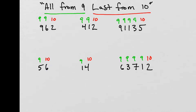Let's try the first example. We can see 9 minus 9 is 0, 9 minus 6 gives us 3, and 10 minus 2 gives us 8. These two numbers we just found using this formula are complements of each other — when added together, they add up to the nearest base number. That's the formula: all from 9, last from 10.